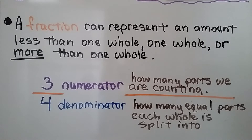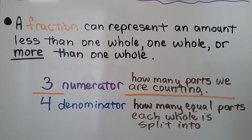Here we have three-fourths. The three is our numerator, the four is our denominator. The numerator tells us how many parts we are counting or how many parts are shaded. The denominator tells us how many equal parts each whole is split into.